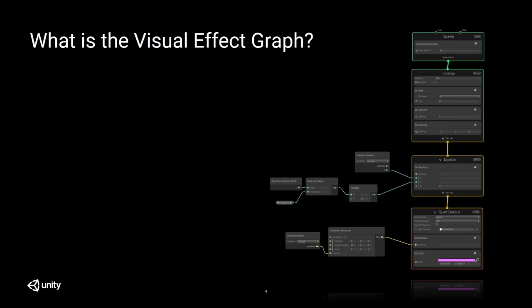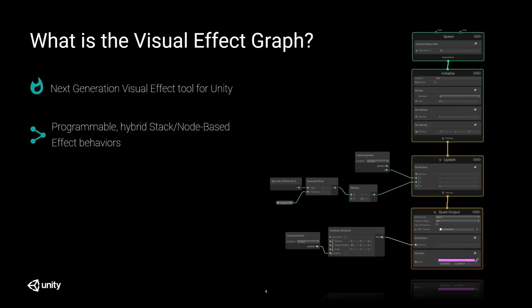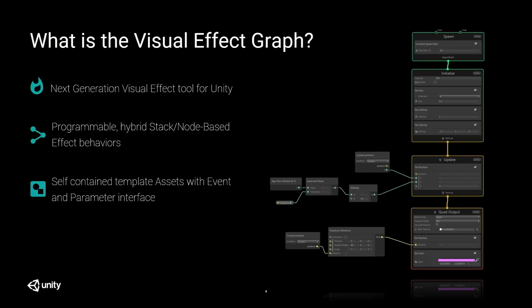So we're going to start by answering this question: what is the visual effect graph? It's a brand new tool we're bringing to Unity to create next generation visual effects in real time. It is fully visual and has a hybrid stack node-based paradigm — you stack blocks into contexts of execution to define behaviors, and then you can drive block parameters with nodes. It is fully programmable and flexible, and we provide a standard library of nodes that can be extended. When you work on a visual effect graph, you work on an asset where you can expose parameters and instantiate it using VFX components within the scene.